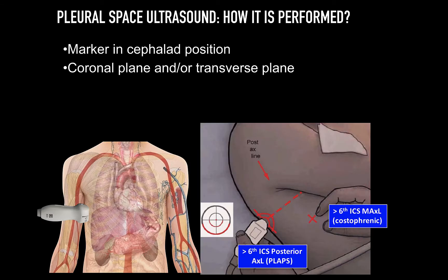How do we perform pleural space ultrasound? As with our eight-point exam, the probe should be placed in the mid-axillary line, and you want the diaphragm in the middle of the screen. This is in the coronal plane, dividing the body from anterior to posterior. The probe can also be rotated 90 degrees to reveal the axial or transverse plane, which is much more akin to what you'd see in a CT of the thorax.